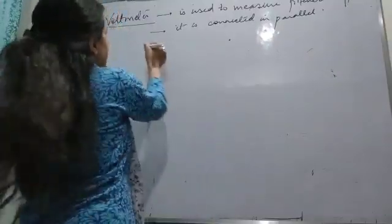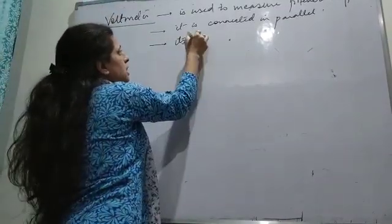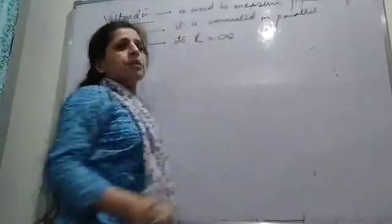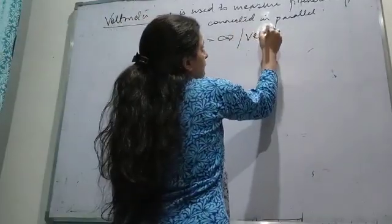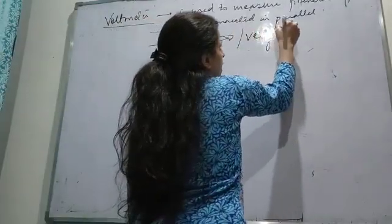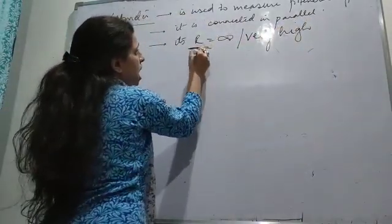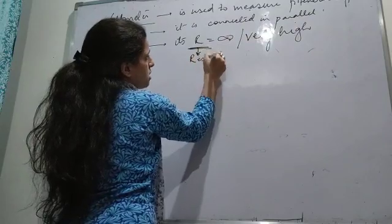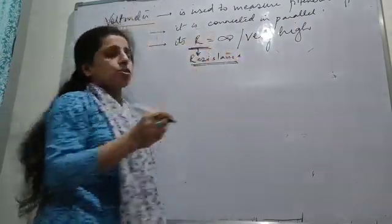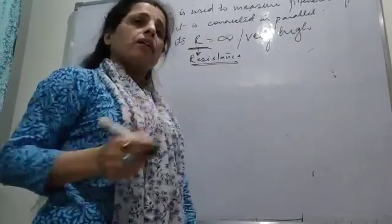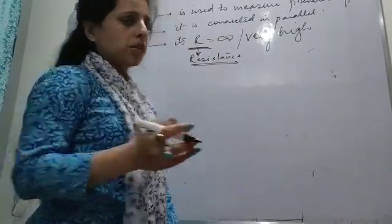In the case of voltmeter, its resistance is very high — close to infinity. Today we will study about R, which means resistance. Guruma has been using this word from the very beginning of the chapter, but today we will study what it actually is.